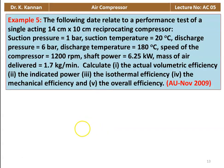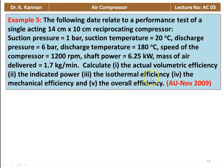Example number 5 from November 2009. Performance test data for a single acting 14 cm × 10 cm reciprocating compressor: suction pressure 1 bar, suction temperature 20°C, discharge pressure 6 bar, discharge temperature 180°C, speed 1200 RPM, shaft power 6.25 kW, mass of air delivered 1.7 kg/min. Calculate actual volumetric efficiency, indicated power, isothermal efficiency, mechanical efficiency, and overall efficiency.